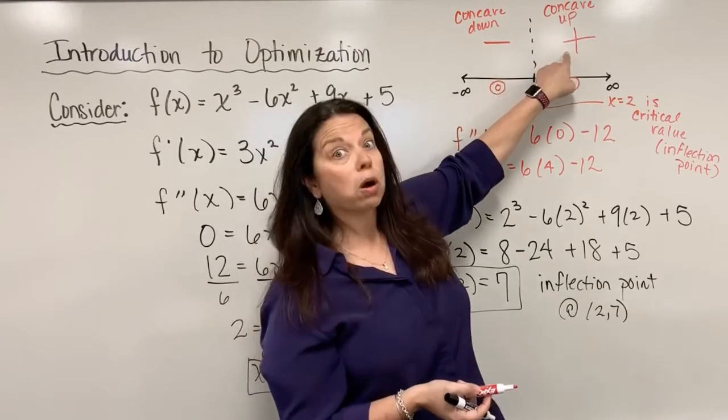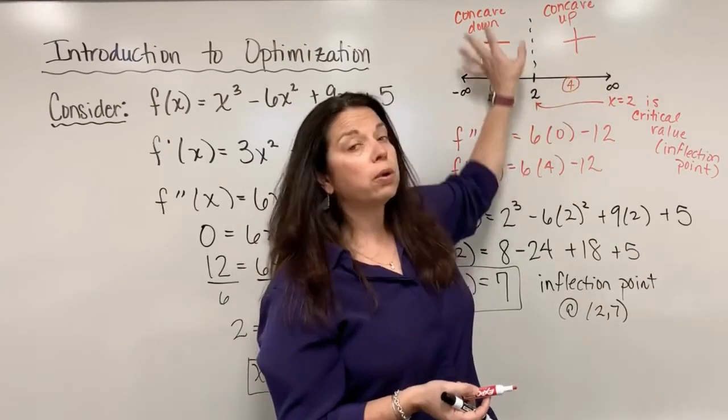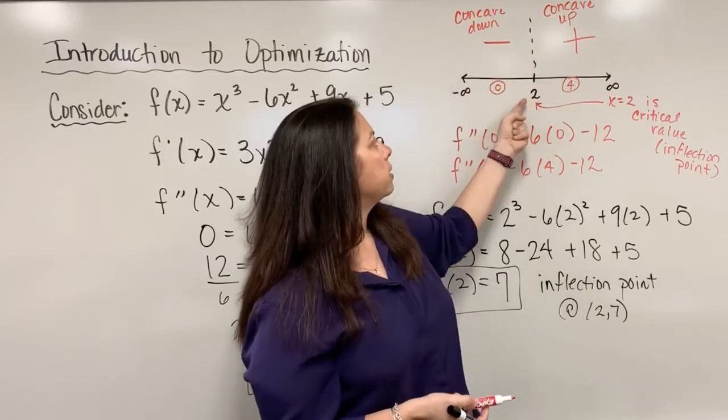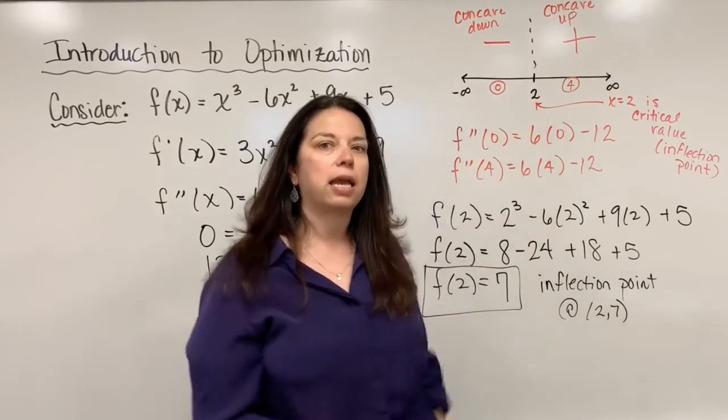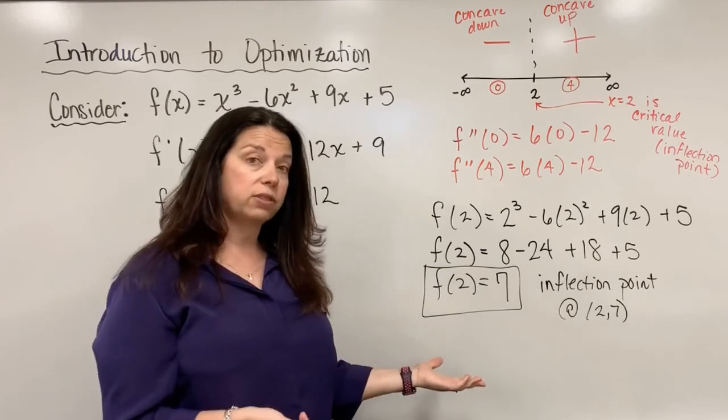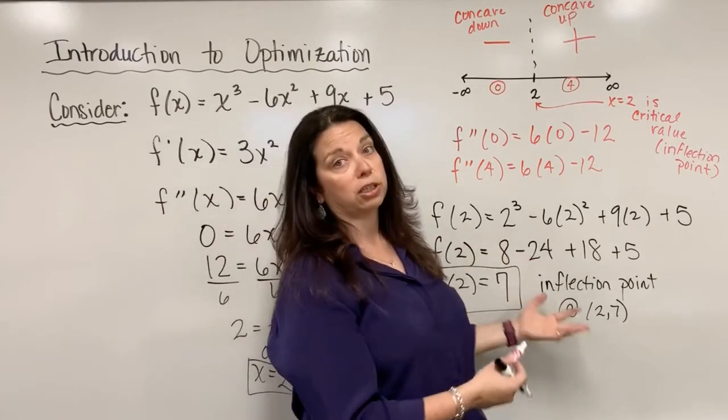You actually have to have a change in concavity as evidenced by the sign change. Either a negative to positive or positive to negative, any one of those scenarios would have revealed to us that this value is in fact a critical value, and in this case for the second derivative test is the inflection point.